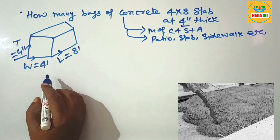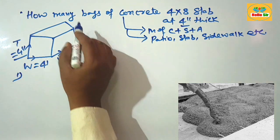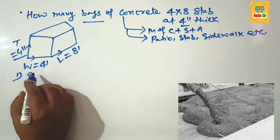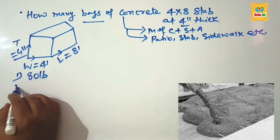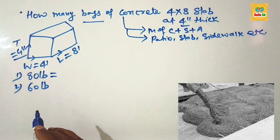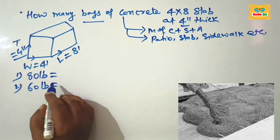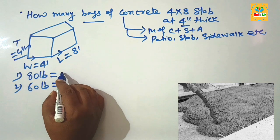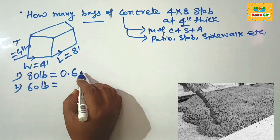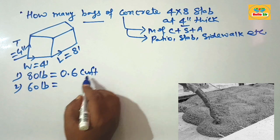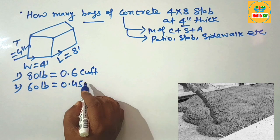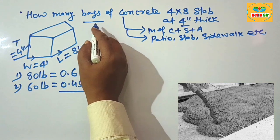We need to find out the number of bags of concrete. Concrete bags come in 80 pounds, 60 pounds, and smaller bags of 40 pounds and 50 pounds. The yield of one 80-pound bag of concrete is 0.6 cubic feet, and a 60-pound bag yields about 0.45 cubic feet.